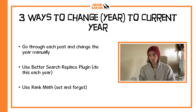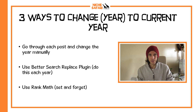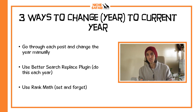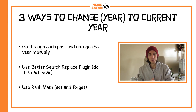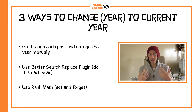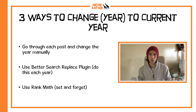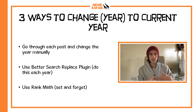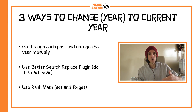So there are three ways that you can do it. The first one is you can go manually do it every year — and I'm sure many of you at this time of year are going through a couple of hundred blog posts that you've written, all with the year in them. That's very time consuming. The second one is to use the Better Search Replace plugin and do it every single year. And the third one, which is the method I'm going to show you in this video, is to just use Rank Math — you do it once, set it and forget it, and every single year it's going to update automatically.